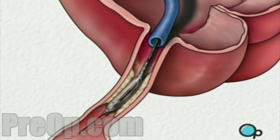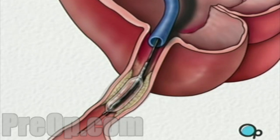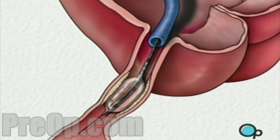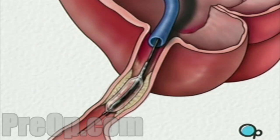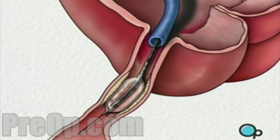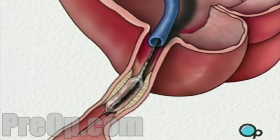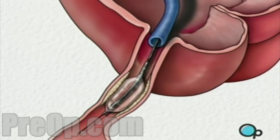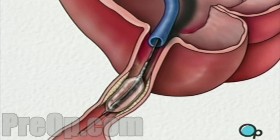The balloon is briefly inflated. As it expands, it squeezes the plaque deposits against the wall of the artery. It also stretches the artery wall and enlarges the channel through which blood flows. Your doctor will continue to inflate and deflate the balloon until normal blood flow has been restored.